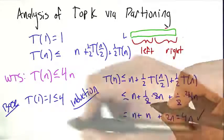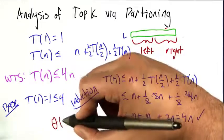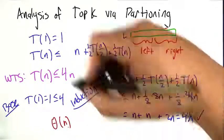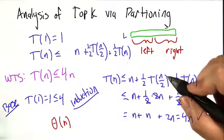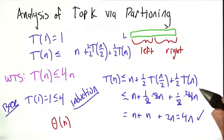But this is pretty remarkable. Because what that means is we actually find the top k elements in big theta of n. 4n is big theta of n. So the running time is going to be linear, which is pretty neat.